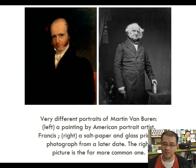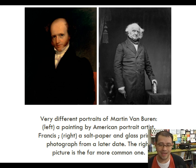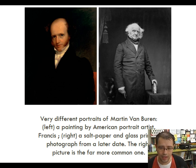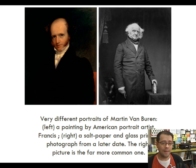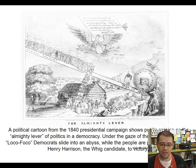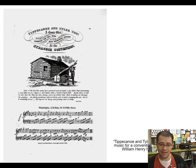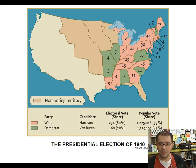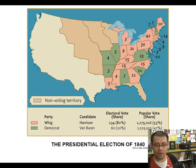Van Buren as president is very unpopular because of the Panic of 1837, which he doesn't deal with well. He refuses to reopen the National Bank, instead withdrawing the money from the state banks and putting it in the Treasury Department — where it just sits stagnant. It curbs inflation a little, but things don't really improve. The result is that in the election of 1840, the Whig candidate William Henry Harrison wins. And that is the story of the bank war.